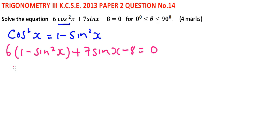and you end up with 6 sin squared x minus 7 sin x plus 2 equals 0.